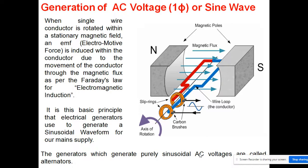Now, how is AC voltage generated? It is a very simple basic concept. In this diagram I am showing the basic concept — you can see the permanent magnet with N and S poles, the direction of magnetic flux, the magnetic poles, and a conductor here.